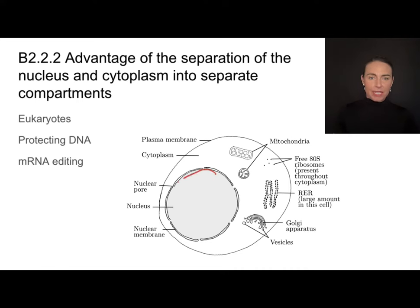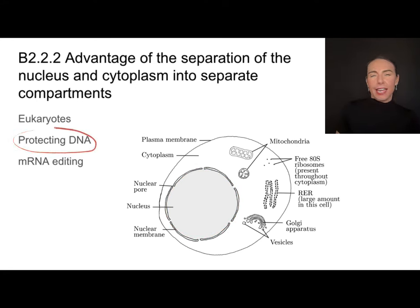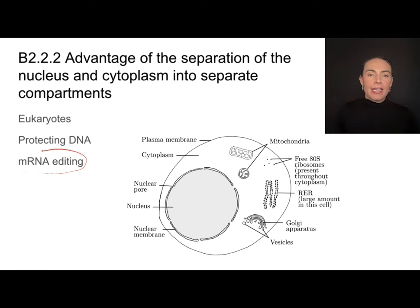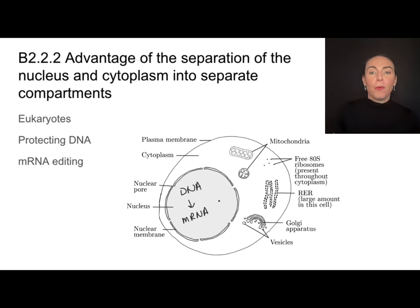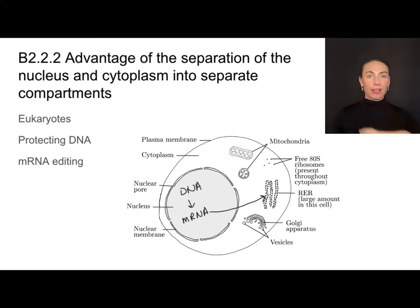When it comes to something like the nucleus, that's really great in terms of protecting the DNA. In prokaryotes, DNA is just free-floating. When we do transcription, DNA is transcribed into mRNA inside the nucleus, and we have the option of editing that mRNA before it goes out and is translated by a ribosome. Prokaryotes, because they don't have a nucleus, don't have the option of that mRNA editing.